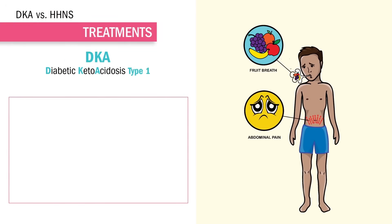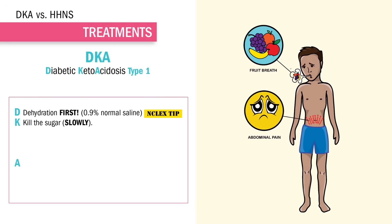For DKA treatments, simply remember the acronym DKA. D is for dehydration — we treat the dry first. Keyword: 0.9% normal saline. Your first priority action for both DKA and HHS is fluids, and the correct answer is always normal saline. K is to kill the sugar slowly to prevent low sugar, so we do hourly blood sugar checks. We want a slow sugar drop.